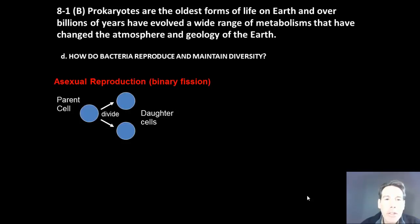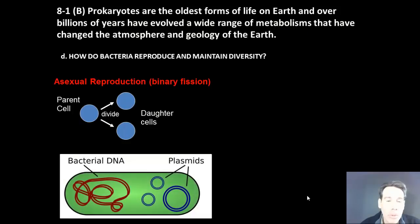However, those two daughter cells are genetically identical to each other, and therefore are equally susceptible to any change in their environment, such as from an antibiotic. So one way bacteria have evolved around that problem is they've evolved these things called plasmids.